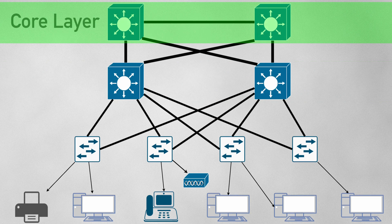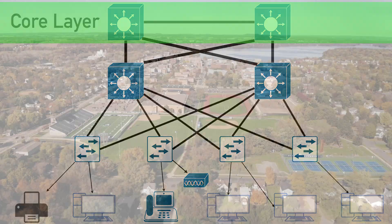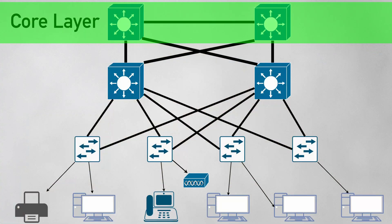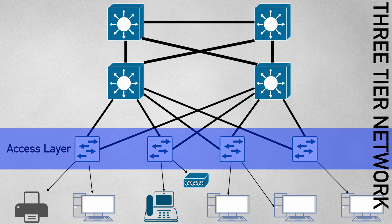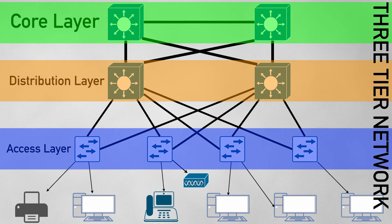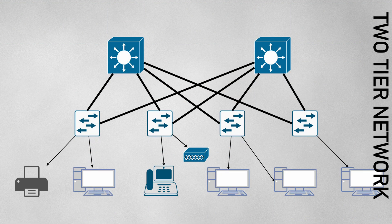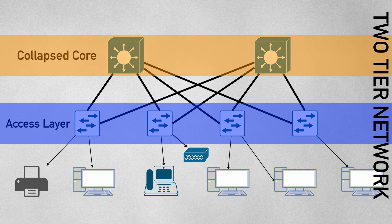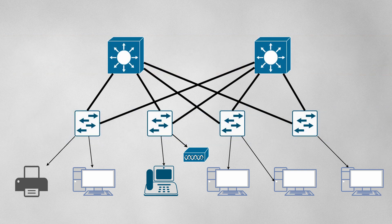Distribution switches then connect to the core layer switch. The core layer is the backbone of the network and connects multiple distribution layer switches, usually via a high-throughput connection. At this layer you may also interconnect multiple remote networks, such as a campus area network. A three-tier network comprising access, distribution, and core layers offers highly scalable networks with high levels of redundancy. A two-tier network is a reduced hierarchy where the distribution layer is merged with the core layer — also called a collapsed core — common in small to medium networks, more simplified and cost-effective, but not as scalable.